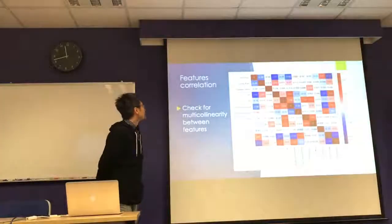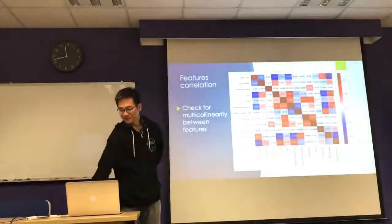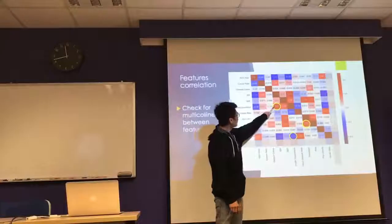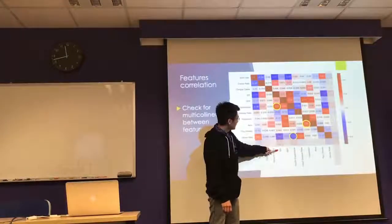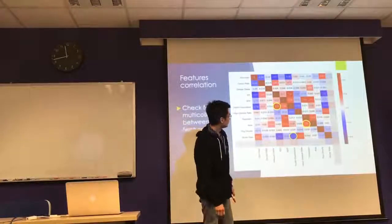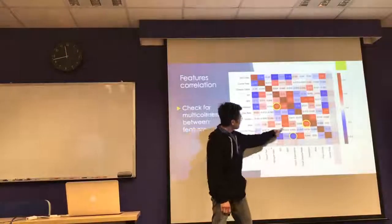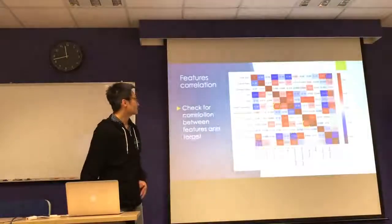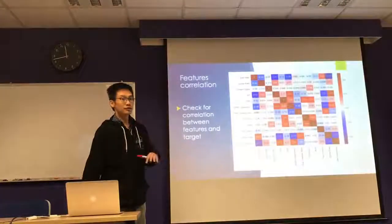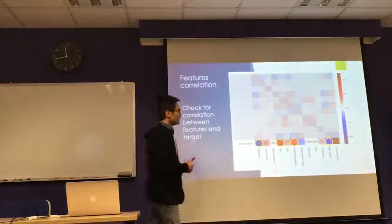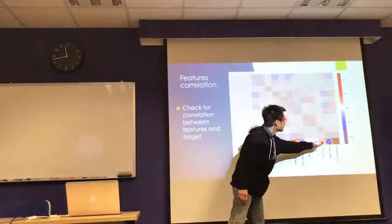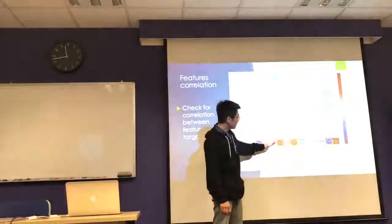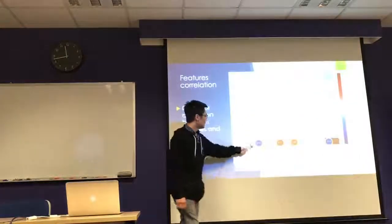First, I did a correlation between features. There are some strong correlations between features. For example, a country that spends more on health expenditure also performs better in environmental things. A big country will have a higher population, but it's okay because they are quite independent still. As for the correlation between features and the target, it's quite strong. To live a long life, you should have a low global stroke rate, spend more on health expenditure, do better in the environment, and have fewer babies.